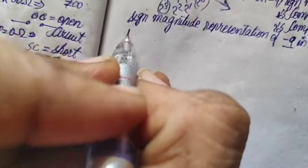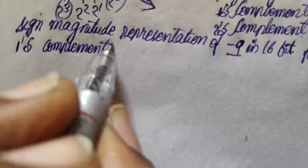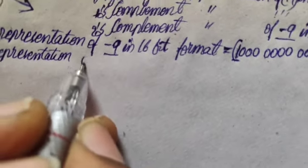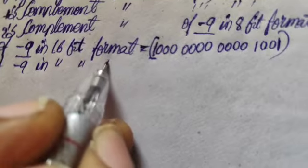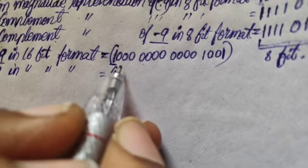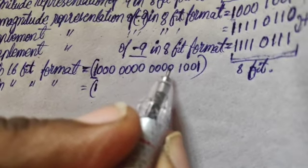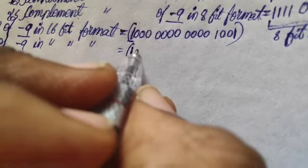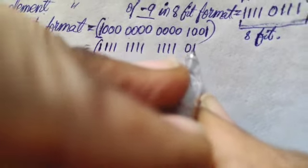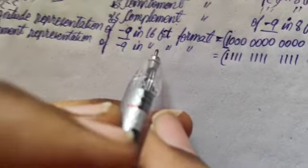Now let us do the ones' complement representation. The MSB bit is going to be the same, and all the rest of the bits are going to be converted from 0 to 1 and 1 to 0. So because of that, we have zeros all over this place converting into 1. This is the 16-bit ones' complement representation of minus 9.